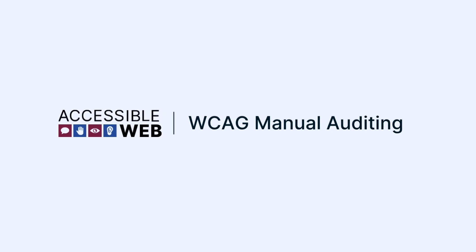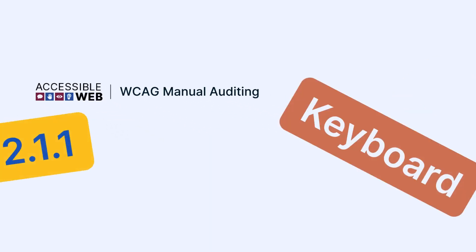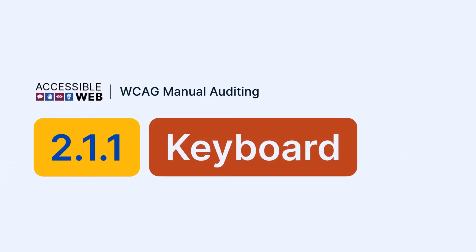Accessible Web. WCAG Manual Auditing. Success Criterion 2.1.1 Keyboard. In this video, we'll walk through how to verify that all interactive content on your site is fully usable with just a keyboard. Let's jump in.